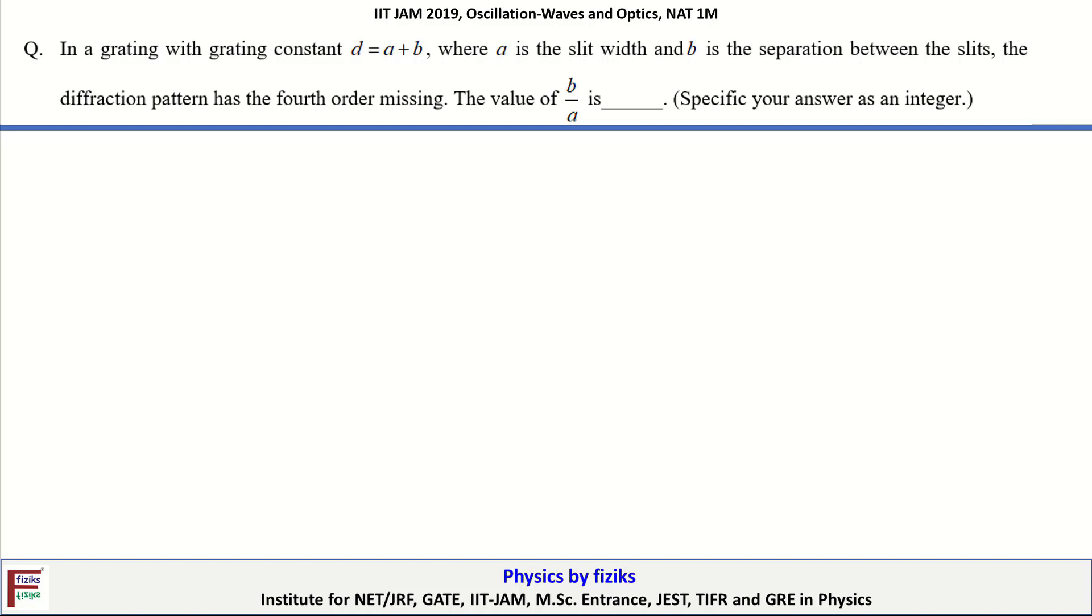In this question, a grating is given whose slit width is A and separation between the slits is given as B. This question says that if the fourth order interference maxima is missing, then we have to calculate the B by A ratio.